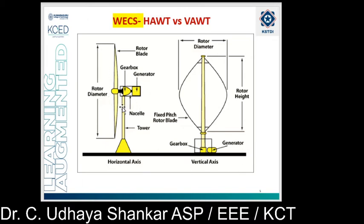In case of HAWT, you can see that the generator and gearbox are maintained at the height of the hub — they are placed in the nacelle on top. Because of this, if there is any failure or maintenance requirement for the gearbox and generator, a maintenance person has to climb to a very high height. This makes maintenance quite difficult compared to vertical axis wind turbine, which is one main cost and accessibility advantage of VAWT.